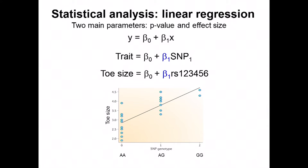Now we have samples and genotypes on all samples — let's do the tests of association. For a quantitative trait, a typical approach is linear regression. For example, if the trait is toe size and we're asking about a given SNP such as RS123456, we look at its effect size for the relationship between that SNP genotype and toe size. If individuals homozygous for the A allele have generally lower toe size and individuals with the G allele tend to have higher toe size, the slope of that line shows the association.